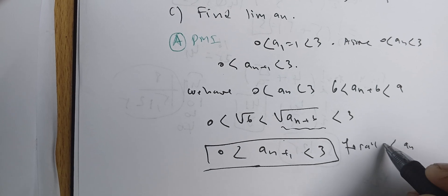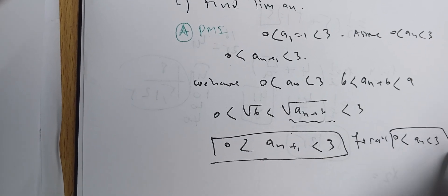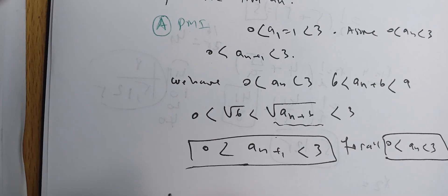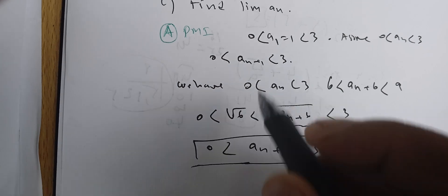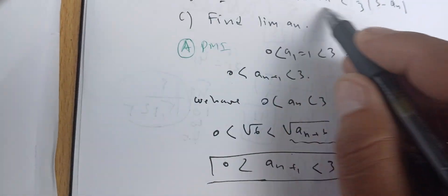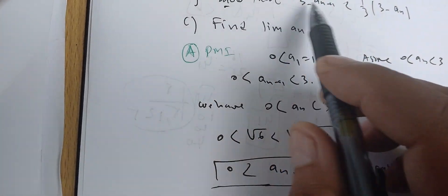Therefore, by mathematical induction, aₙ is between 0 and 3 for all n.